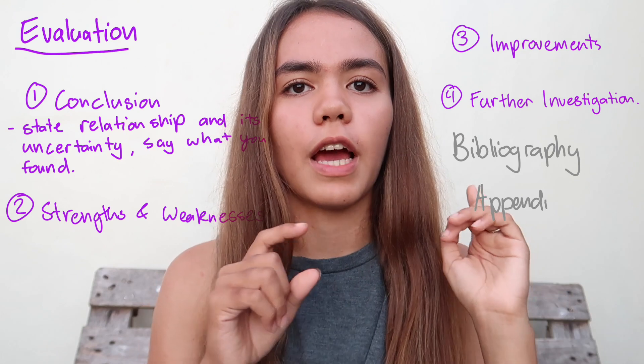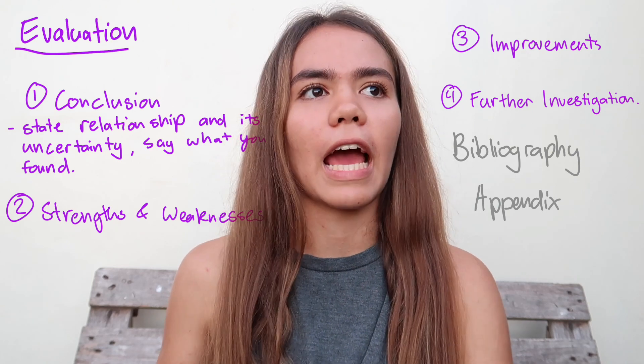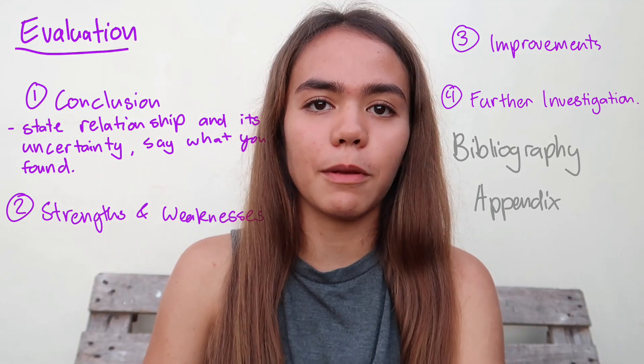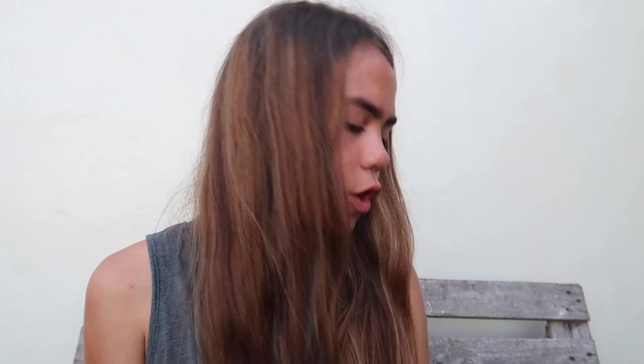Finally, at the end of your IA, you want to make sure you have a bibliography citing all your references, and an appendix for any extra information you wanted to add but didn't want to include right in the IA. If there are any tables taking up too much space, you can put them in the appendix. That's basically all you need to know about how to structure your IA. The point of this video wasn't to tell you exactly how you must write your IA, but to talk about the key elements you need to include in order to score that 7. Both of my IAs don't follow this exact structure, but both include all of the elements I talked about.